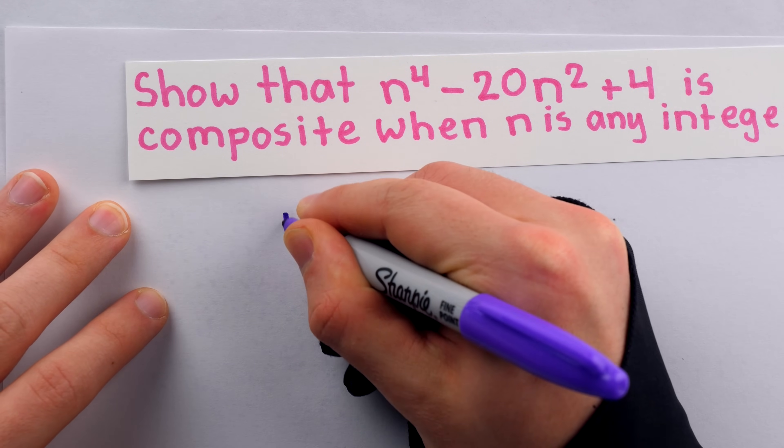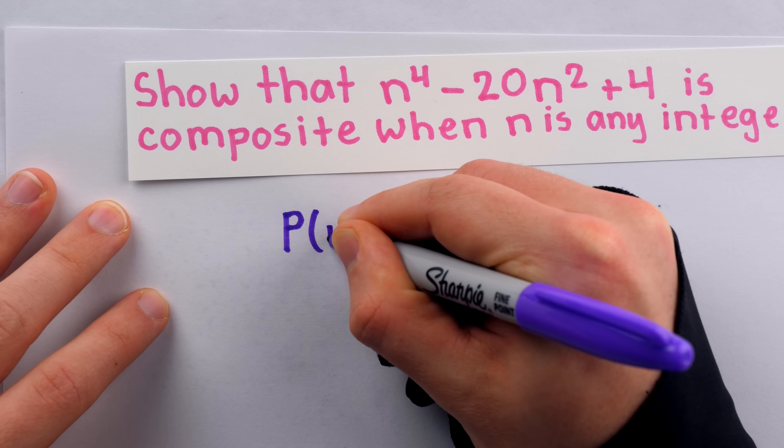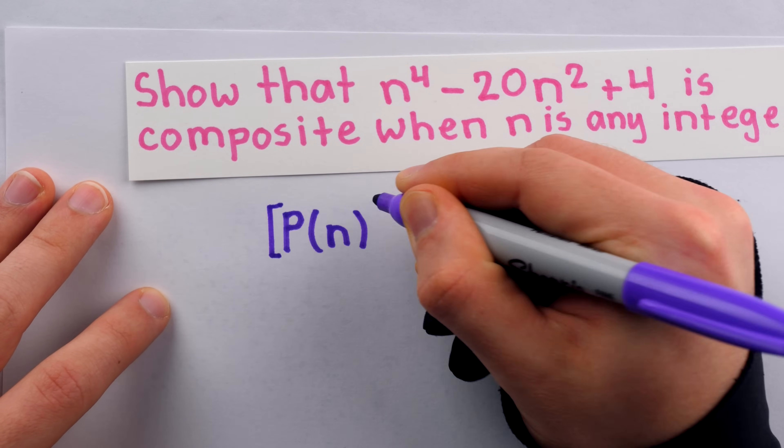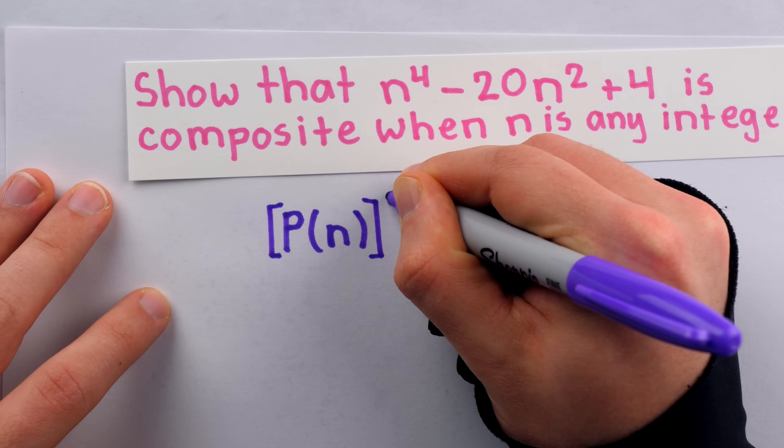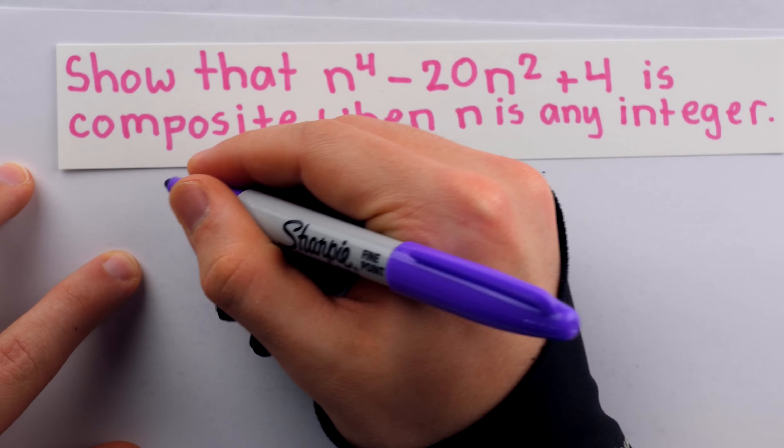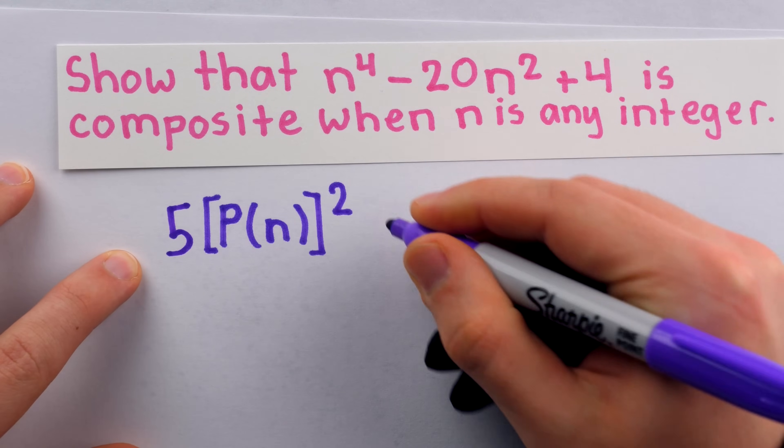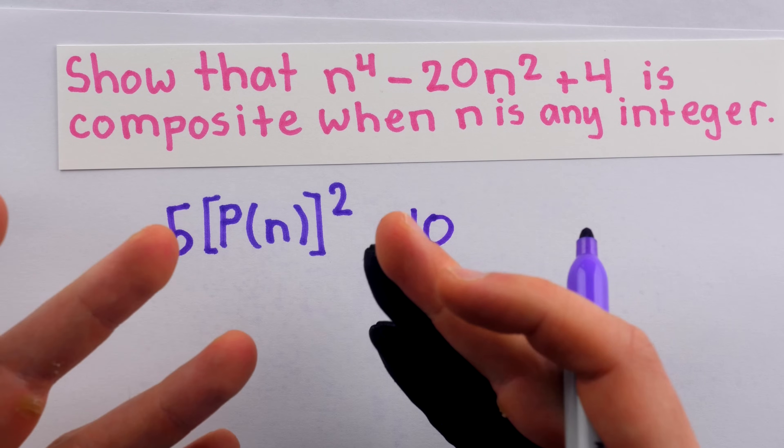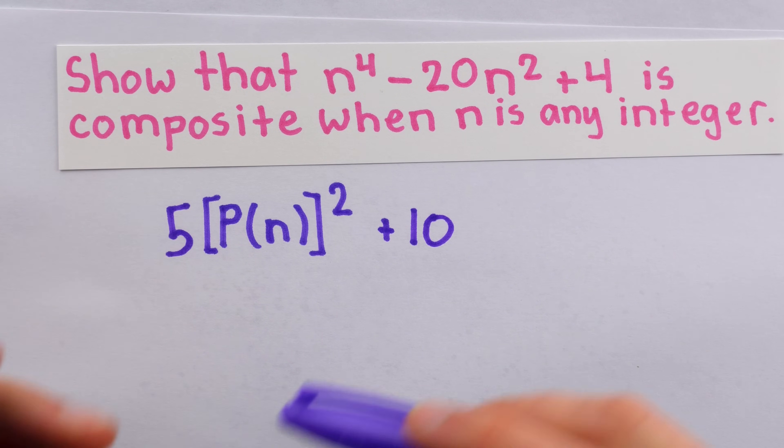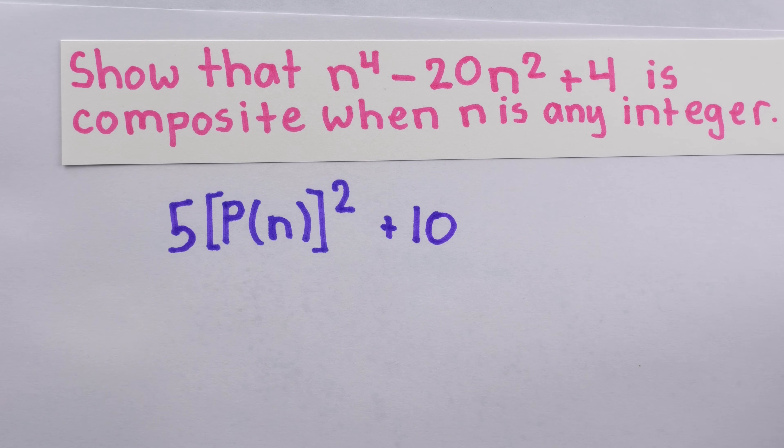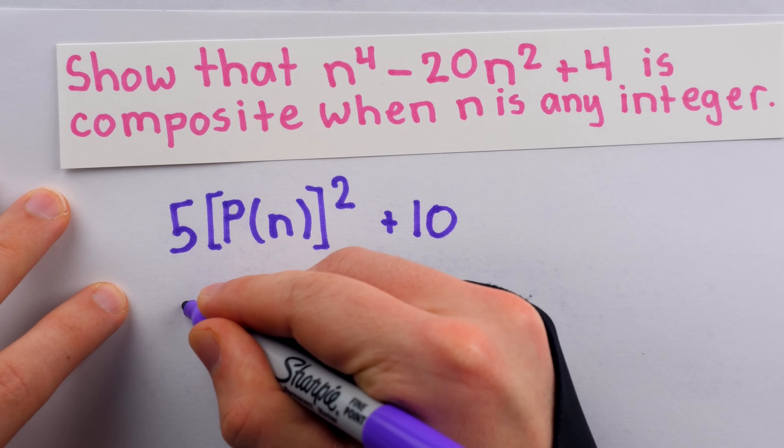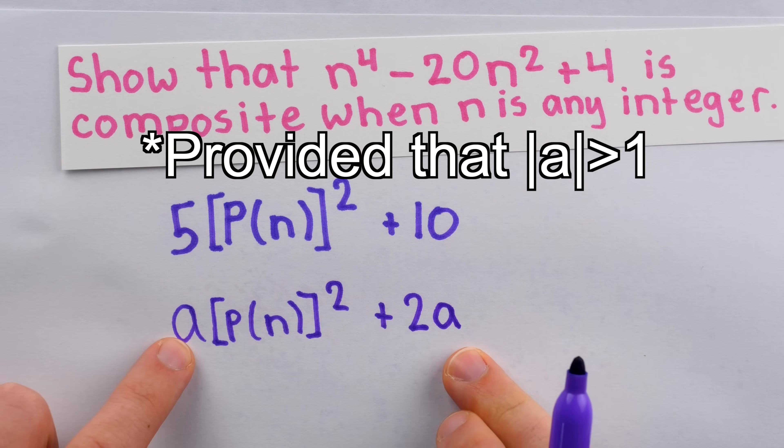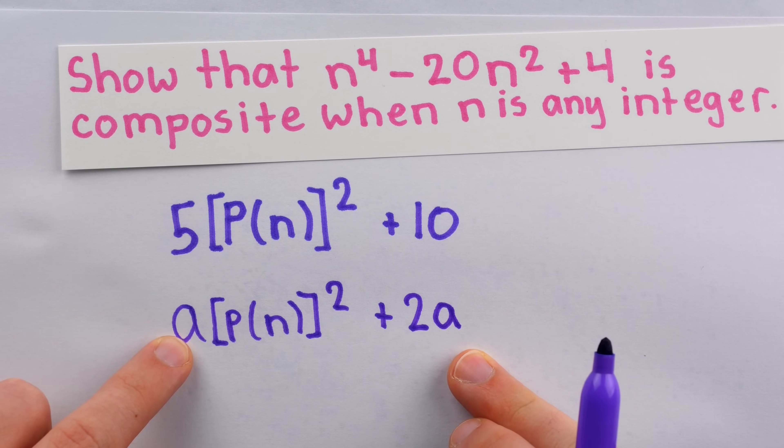For example, for any integer polynomial p of n, we could create a composite polynomial, so to speak, by just squaring this so that it is always non-negative, then multiply it by a number like 5 so that it's always a multiple of 5, and then add 10 so that it's always at least the second multiple of 5, so it's always a composite number. Of course, there's nothing special about 5 and 10. We could do this with any integer a and 2a, and thus construct a polynomial that always gives composite outputs with integer inputs.